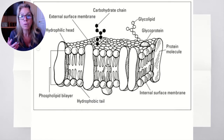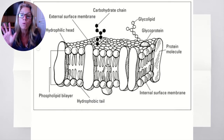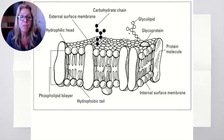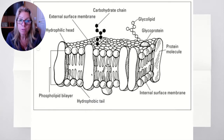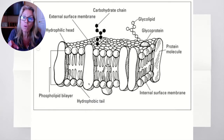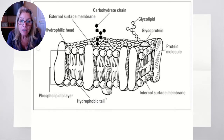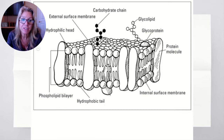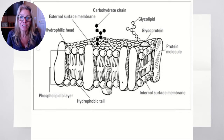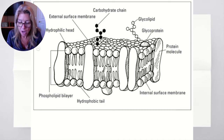The carbohydrate side chains are only on the outside. Looking at these proteins — some are going all the way across, some are partial on the side — and we're going to discuss each of those two. But let's dive into your notes.